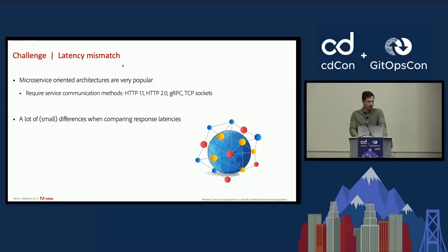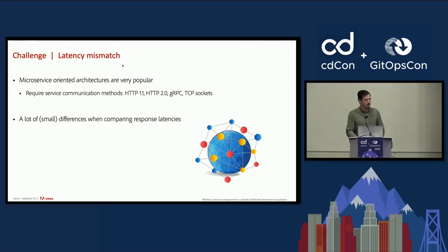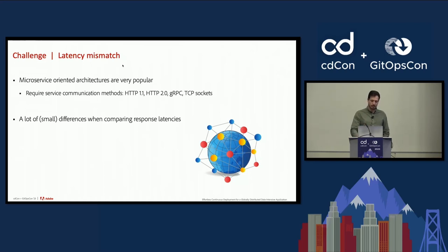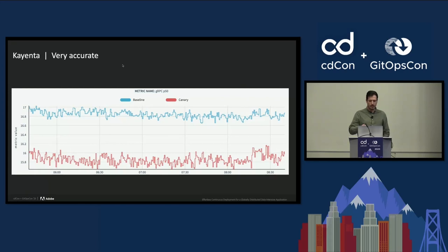We had a few challenges to make the canary analysis reliable. As microservices are very popular today, one issue we faced is that we observed a lot of differences when comparing response latencies between services. The differences were small, but they were present. Kayenta is very accurate, so it was detecting these small latency differences — even when comparing a version with itself.